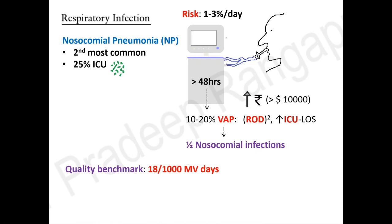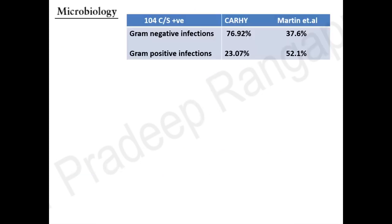Having an SOP to prevent ventilator-associated pneumonia is an important quality indicator for any ICU. The quality benchmark is 18 per thousand mechanical ventilation days. Infection control teams should monitor VAP rates, and if rates exceed 18 per thousand ventilator days, you need to improve SOPs and systems to reduce VAP risk.